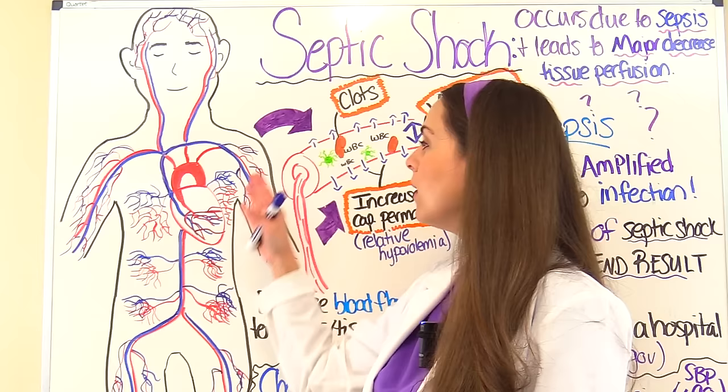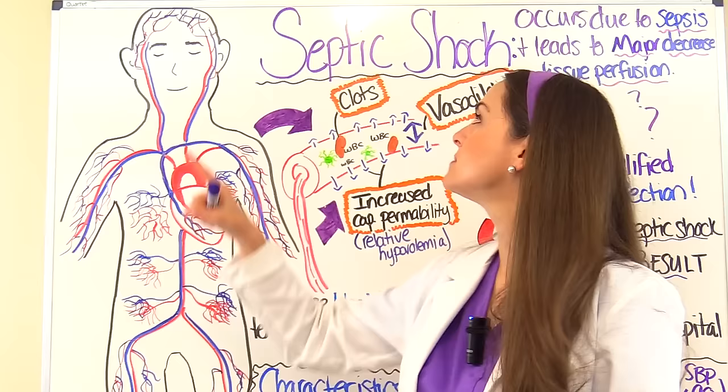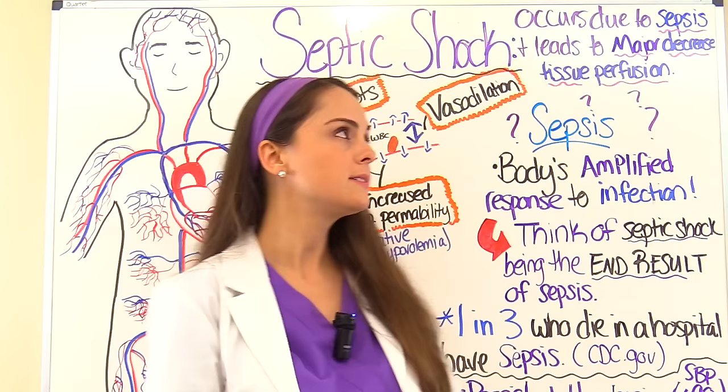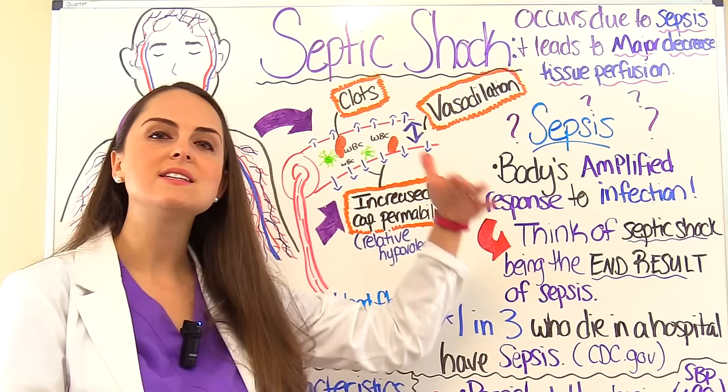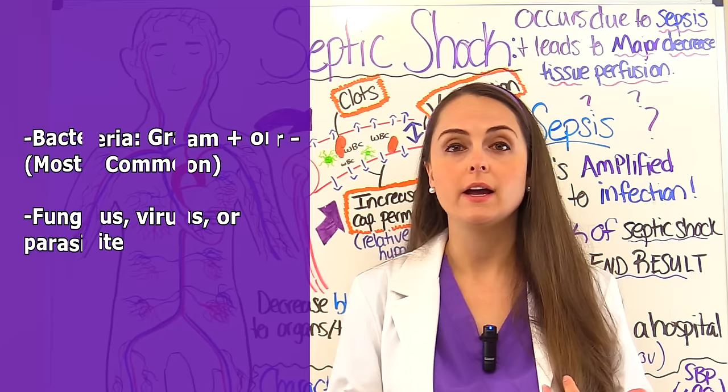The reason blood is not flowing to those cells in septic shock is because we have issues with how these small vessels are able to distribute blood flow, and it's going to come from some type of invasion from a microorganism — which is where the word 'septic' comes from. Sepsis is where you've had that invasion of a microorganism in the body, and the microorganism can vary. It can be bacteria, which is the main cause of sepsis — gram positive or gram negative.